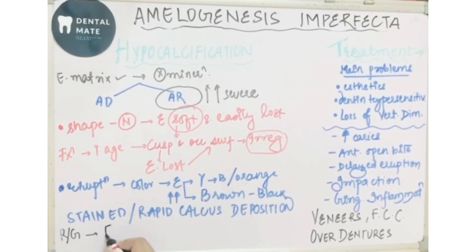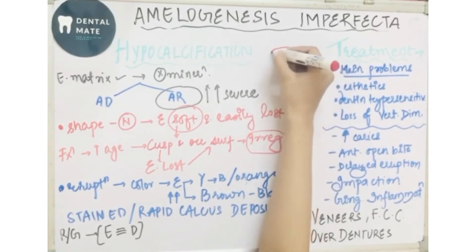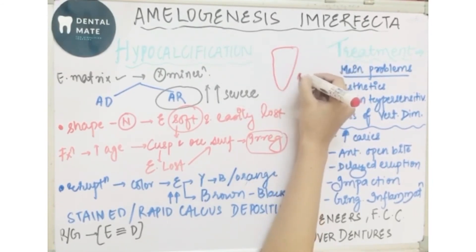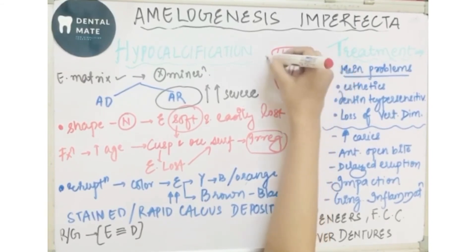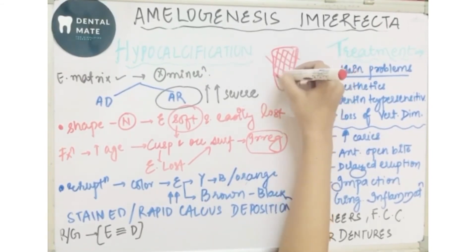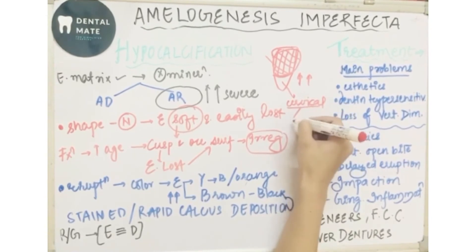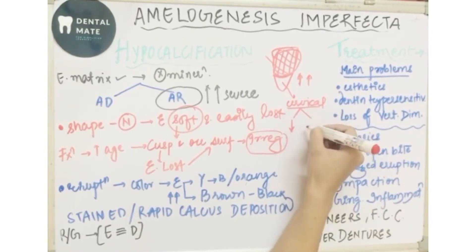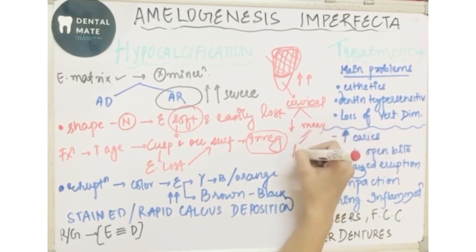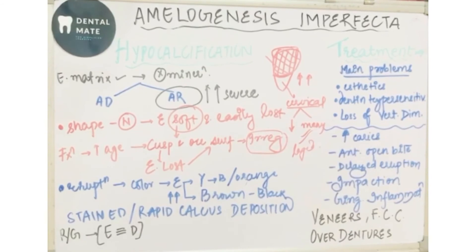If we look at the radiograph, there is no contrast between enamel and dentine — enamel and dentine appear almost similar in density. The coronal portion of the enamel is chipped off completely; what remains is only the cervical portion. The cervical portion is spared for two reasons: first, it comes less in function, and second, it is protected by surrounding structures.